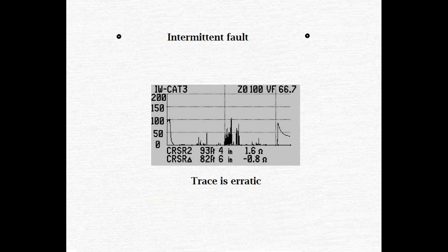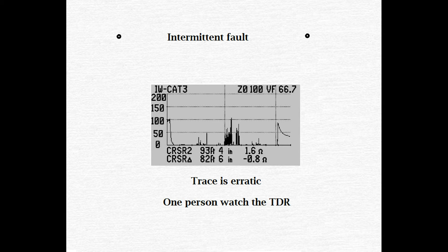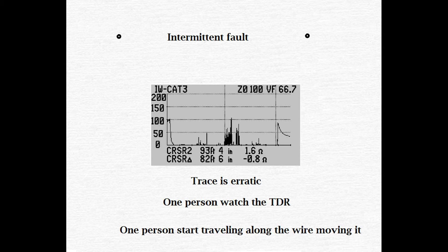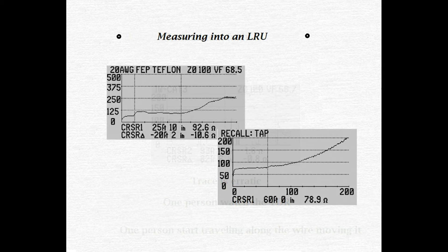Here we see a technician's worst nightmare, an intermittent fault. With the TDR, each time it sends out a pulse can be changing, which will result in an erratic trace. To troubleshoot this one, enlist the help of another person to watch the TDR. While you travel along the wire moving it, eventually you'll find the spot that's causing the erratic reading.